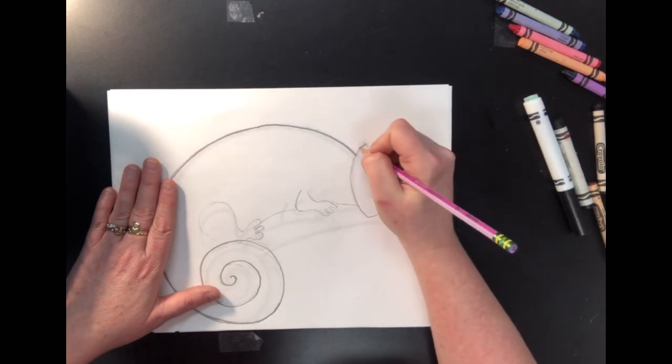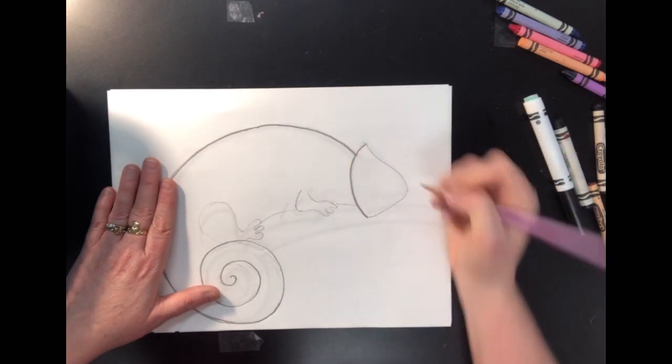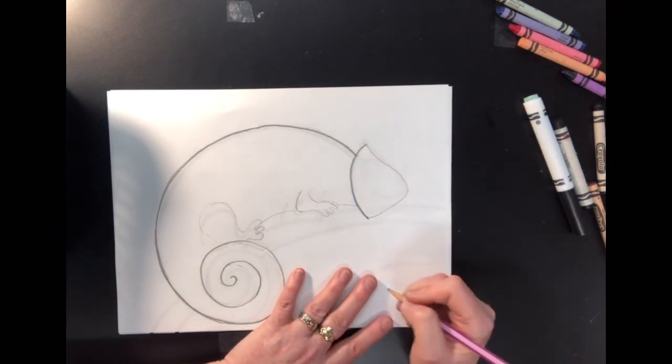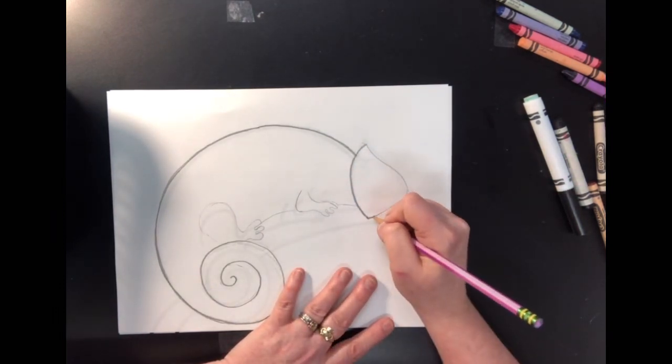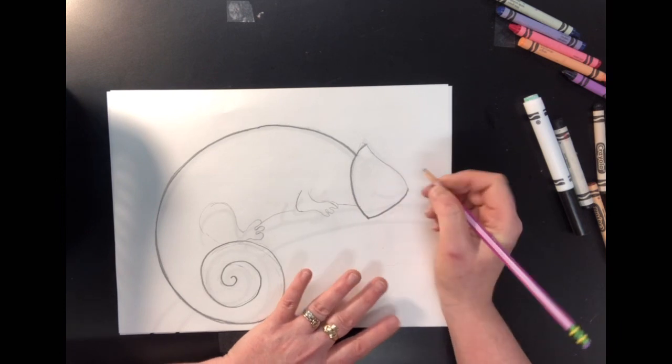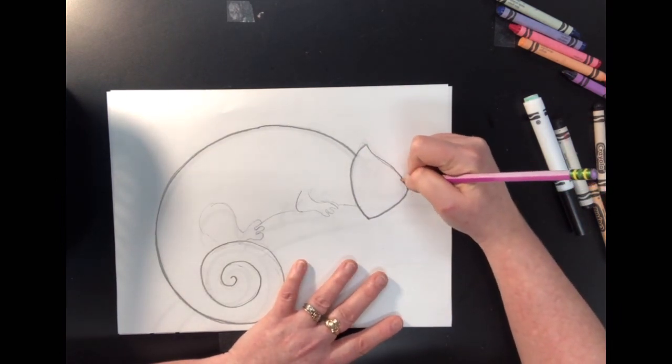I like to think of it more as a triangle with curved lines. So I'm curving my line instead of making a straight line, and I'm curving this line here, and curving this line here.